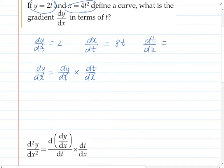So then it's just a simple case of substitution. We're going to have 2 times 1 over 8t, which will simplify to 1 over 4t. And that's it, dy/dx in terms of t.